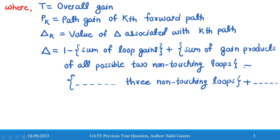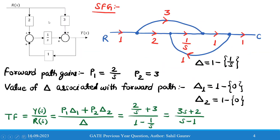Now coming to this problem: R(s) is the input and Y(s) is the output. The gain values given are 2, 3, 1/s, and 1, and there are summation blocks represented. We will first convert this block diagram into a signal flow graph.